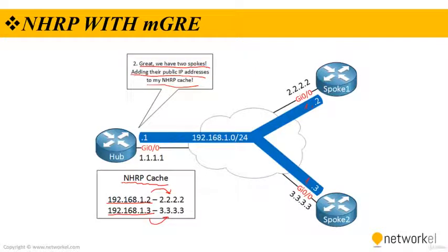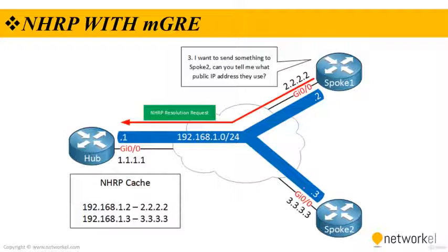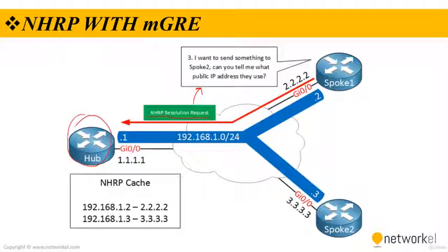After a few seconds, spoke 1 may want to send packets to spoke 2 and needs to figure out the destination public IP address of spoke 2. It will send an NHRP resolution request asking the hub router for the public IP address of spoke 2. As you can see, the NHRP resolution request is sent to the hub asking what public IP address spoke 2 uses. The hub then uses its NHRP cache to answer this query.